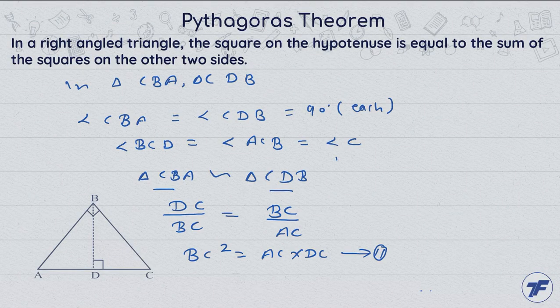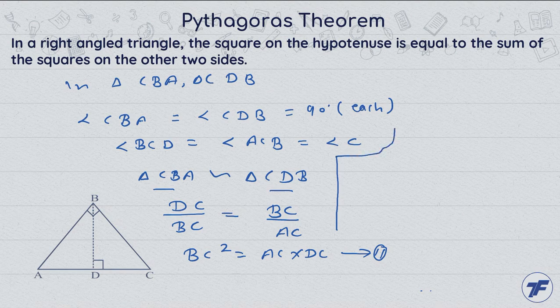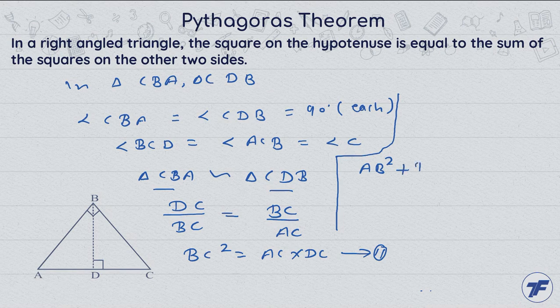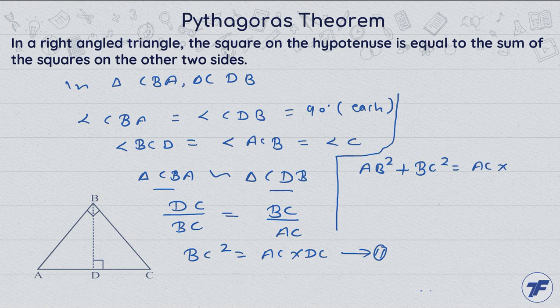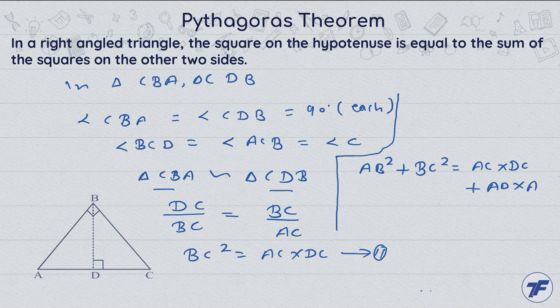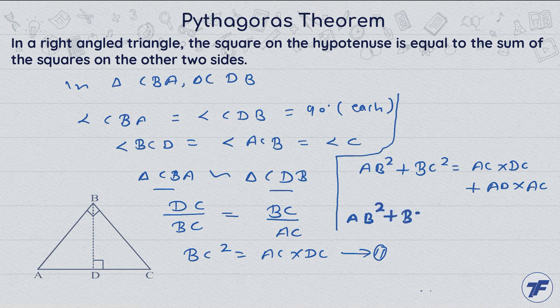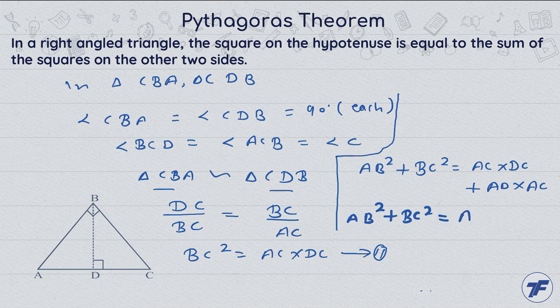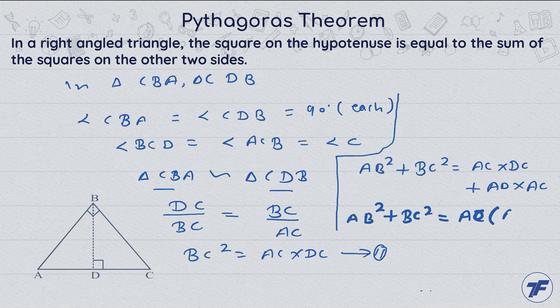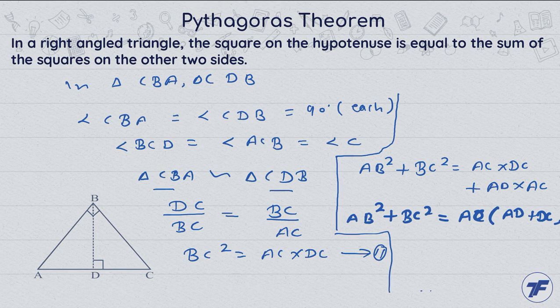First equation: AB squared equal to AC into AD. Now add first and second equations.